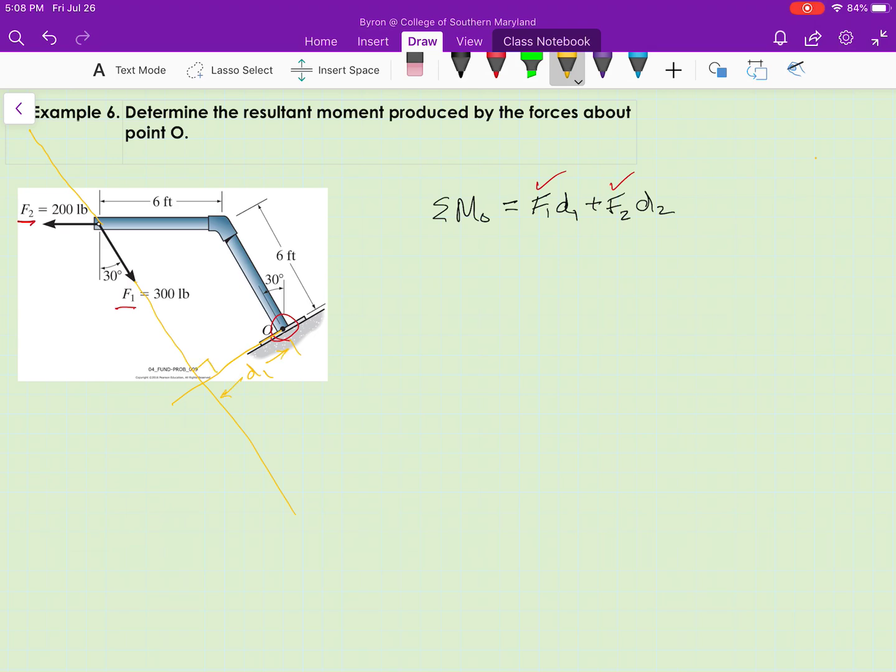We know it's perpendicular at the vertex there where they intersect. And we also know that because they tell us that these angles are both 30 degrees, the line of action of F1 is parallel to the axis along the pipe.